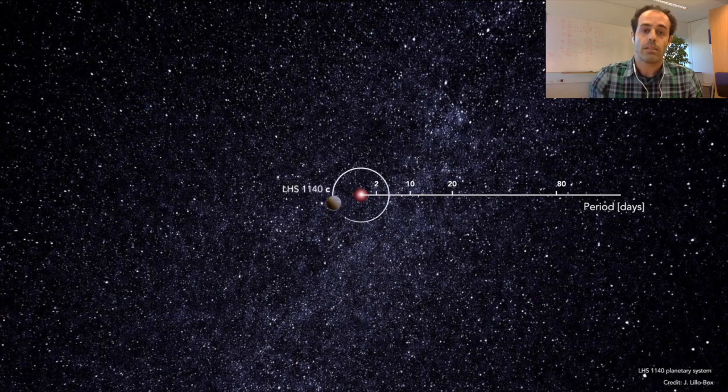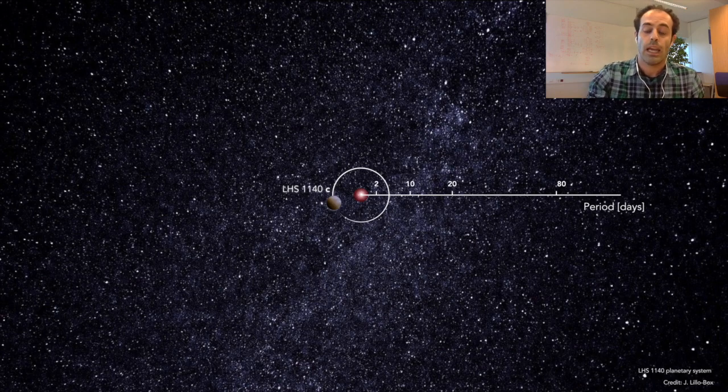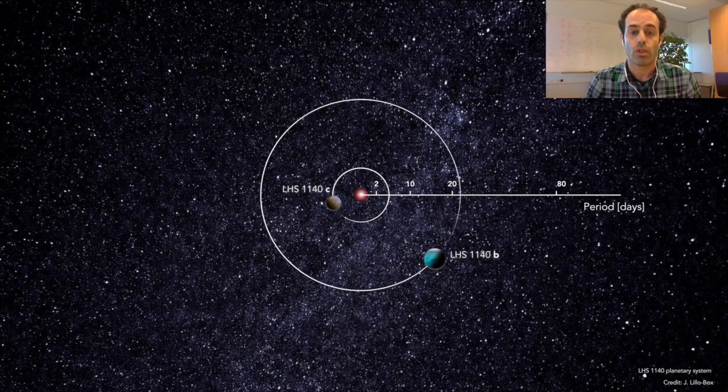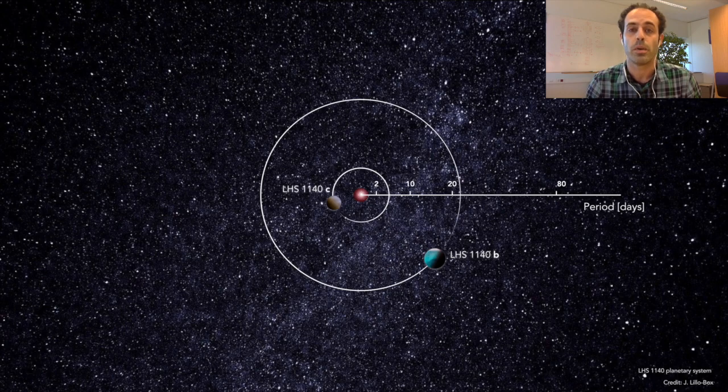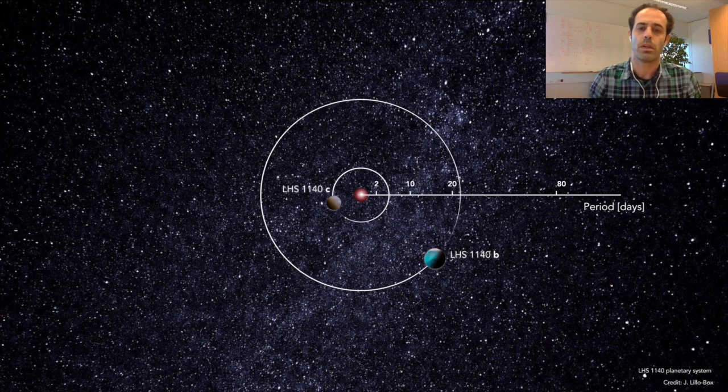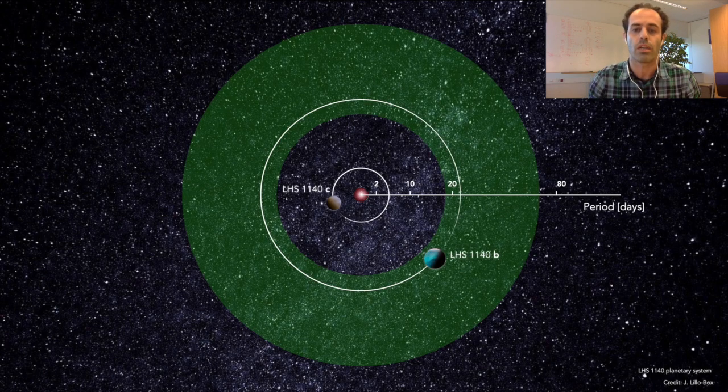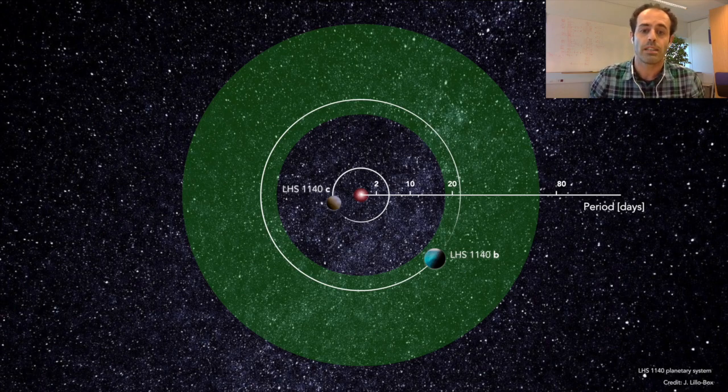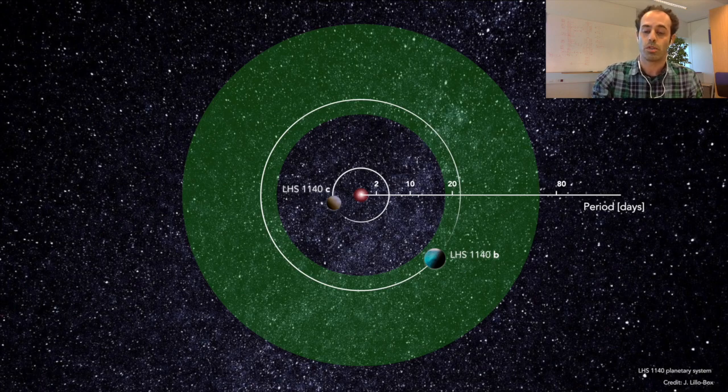The inner planet is called LHS 1140c and has an orbital period of around 3.8 days, and the outer planet is called LHS 1140b and has a periodicity of 24 days. This is very interesting because it means that planet b is located inside the habitable zone of this host star and both planets are potentially having rocky compositions.